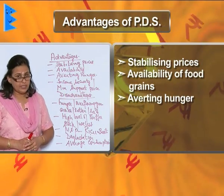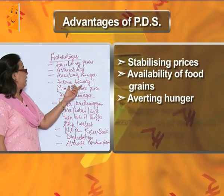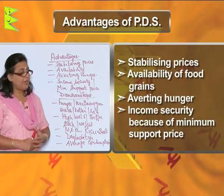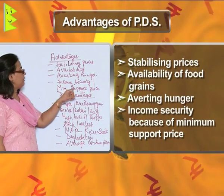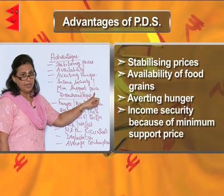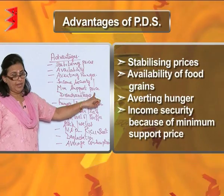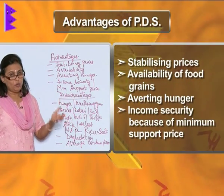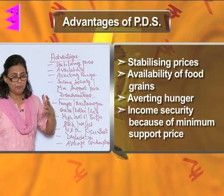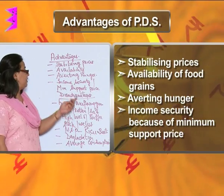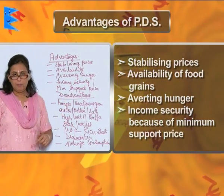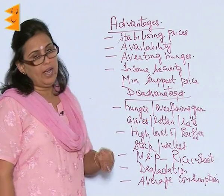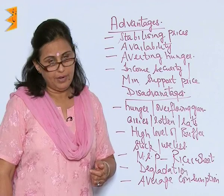This system has also given income security to the farmers because of the minimum support price announced by the government every year. So they are sure as to what their income or profit would be in a particular year. But as the coin has two sides, the system also has various disadvantages.